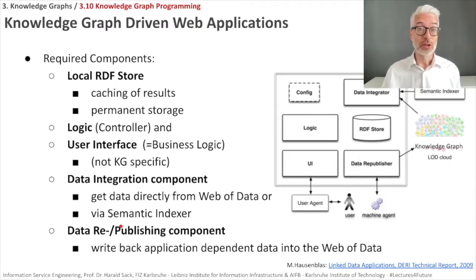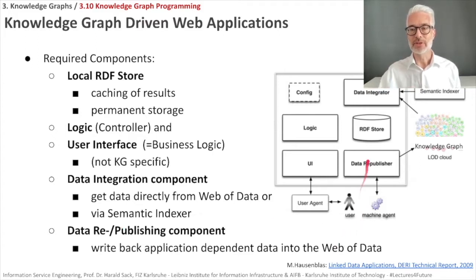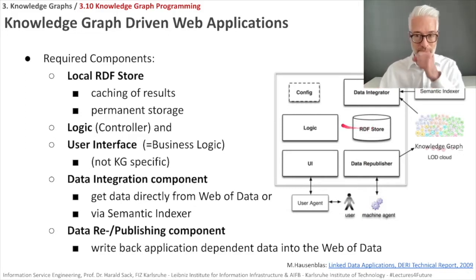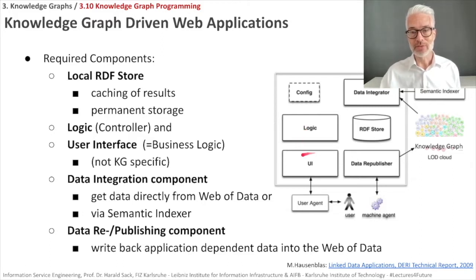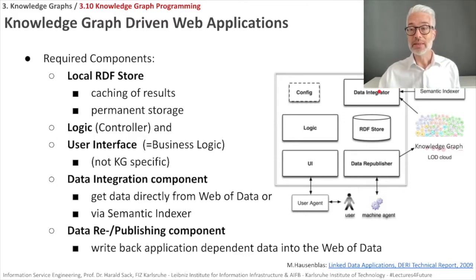The architecture of knowledge graph-driven applications that access some knowledge graph on the web is implemented as follows. The required components are: first, some kind of a local RDF store for caching results or as permanent storage. Then you need some logic — the program that implements all the algorithms accessing and manipulating the data. And of course you need a user interface. You also need a data integrator or data integration component, whose purpose is to get data directly from the web.